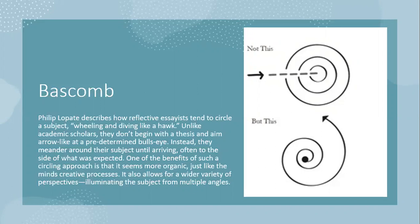Instead, in an academic essay you create a thesis and aim straight for it. Bascom says this personal essay style seems more organic, because that's the way we think. We don't come up with the main answer first — we have to think about it. We think about our experiences, our observations, we weigh them with facts and data we've acquired over the years or recently, and then we can come to a conclusion. This illuminates things from multiple angles, so at the end we discover an answer, or a tentative answer.